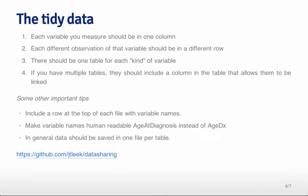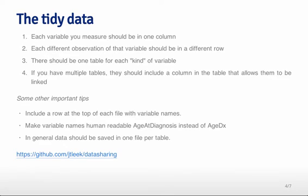A couple of other important tips: include a row at the top of each file with variable names. It's also much more useful if the variable names are human readable. For example, use something like 'age at diagnosis' for a column name as opposed to something like 'age_dx', which might be confusing and hard for people to read - it's better to err on the side of being more explicit. In general, data should be saved in one file per table, rather than saving data in multiple Excel spreadsheets within a single Excel file.